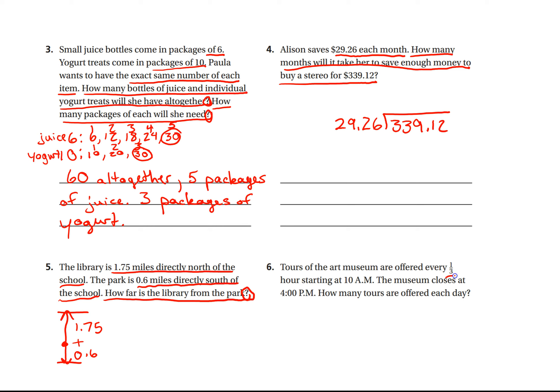Number six, tours of the art museum are offered every one-third hour, starting at 10 a.m. The museum closes at 4 p.m. How many tours are offered each day? So every third of an hour, that means every one hour. So if we're dealing with thirds, how many thirds do we need to get one whole hour? Well, one-third plus one-third plus one-third, that would be three-thirds or one whole hour. So now you need to find out how many hours from 10 a.m. to 4 p.m. How many hours would that be?